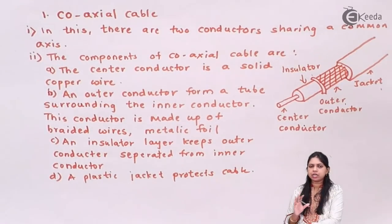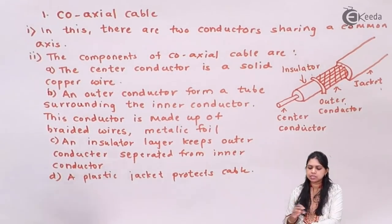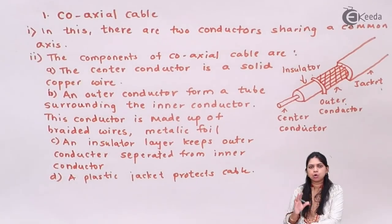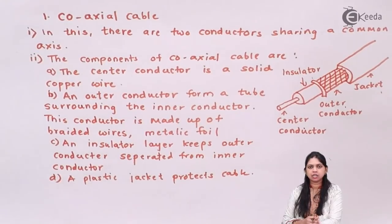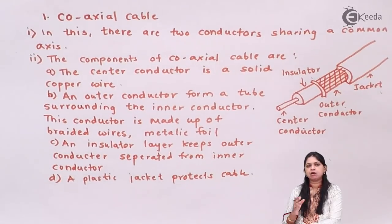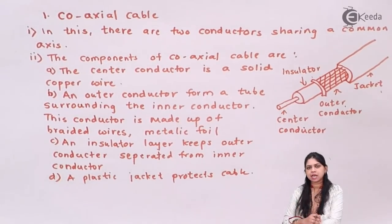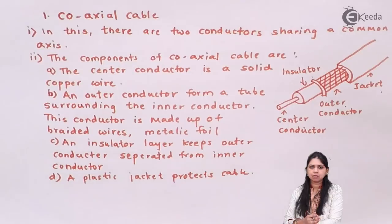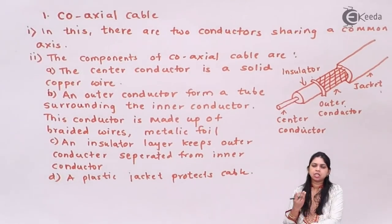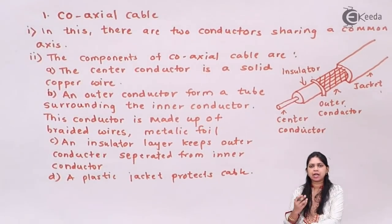Every transmission media has some characteristics, and coaxial cable has its own set of characteristics. There are six characteristics of transmission media: cost of media, installation requirement, bandwidth, band uses, attenuation, and EMI.